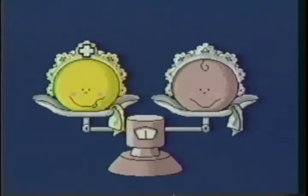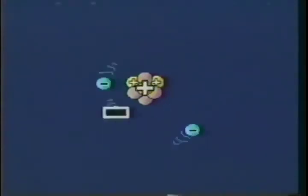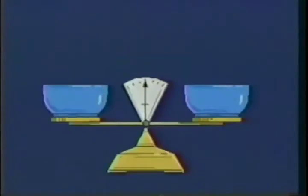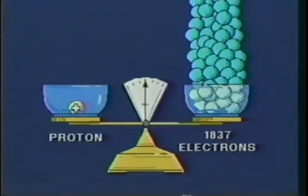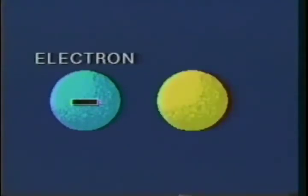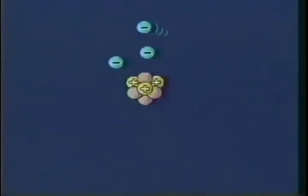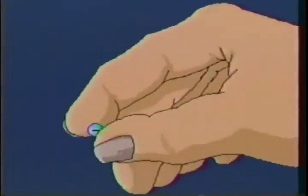Neutrons and protons are almost identical in mass. In the space surrounding the nucleus are tiny negatively charged particles called electrons. The attraction between the negatively charged electrons and the positively charged nucleus keeps the electrons in the vicinity of the nucleus as they circle it. It takes 1837 electrons to equal the mass of one proton. But the charge on a single electron exactly balances the positive charge on a proton. Electrons which are farther away from the nucleus experience a smaller force of attraction than those which are closer to it. These outer electrons can be removed with relative ease.